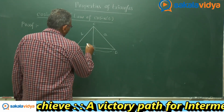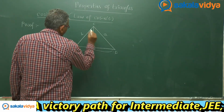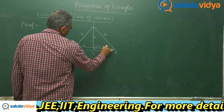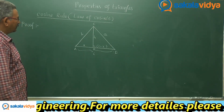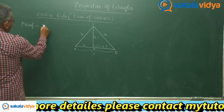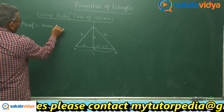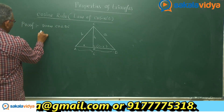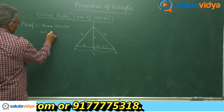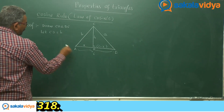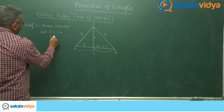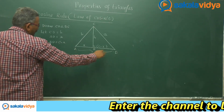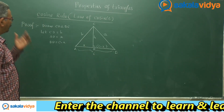Let CD equal small h (the perpendicular height), and let AD equal small x. Then BD becomes c minus x, since AB equals small c.